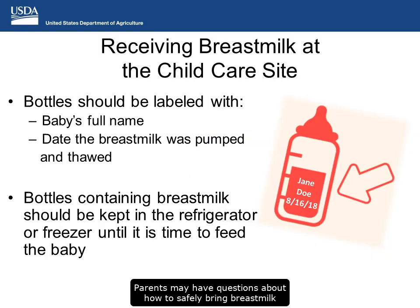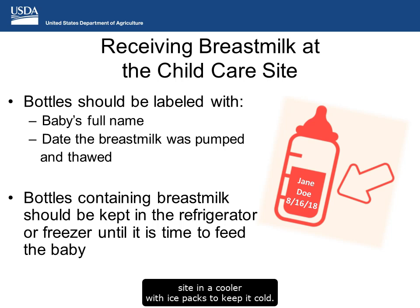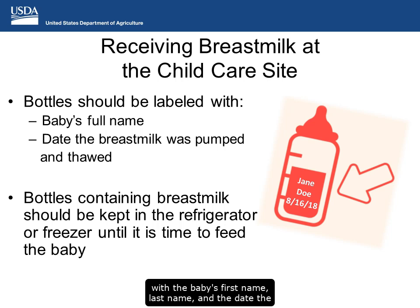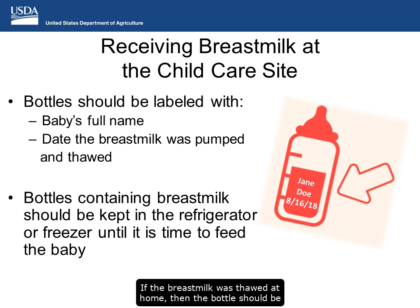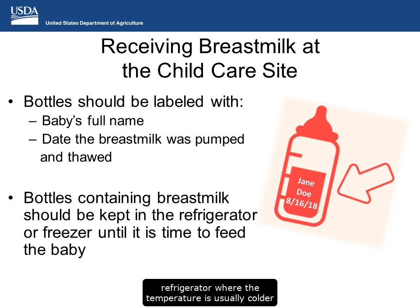Parents may have questions about how to safely bring breast milk to the child care site. Ask parents to bring breast milk in a cooler with ice packs to keep it cold. Bottles or bags of breast milk should be labeled with the baby's first name, last name, and the date the breast milk was pumped. If the breast milk was stored at home, the bottle should be labeled with the date it was stored. The breast milk should be kept in the refrigerator until it is time to feed the baby, placed at the back of the refrigerator where the temperature is usually colder, and not on the door.